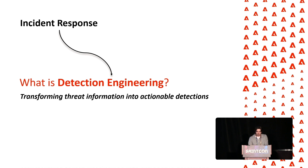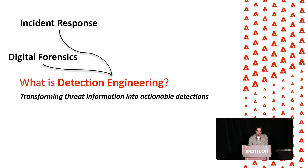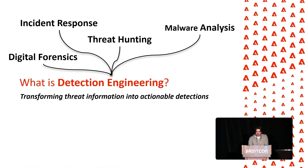Those insights can help refine detection rules. The digital forensics teams — during their analysis, if they have a compromised host and they're doing forensics on that host, they can find all sorts of different artifacts and things that can help in creating alerts. Threat hunting is also pretty straightforward — when they're doing threat hunting in your environment, the searches they're performing and the results can be used in building detections. Then you have malware analysis as well as threat intelligence. All of these are some examples that go into detection engineering.